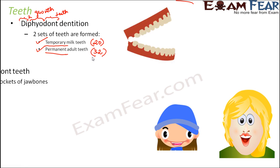The other type of dentition is one where only one set of teeth is formed throughout lifetime. Another specialty about the teeth of human beings is that they have thecodont teeth.